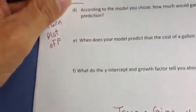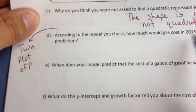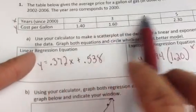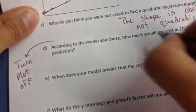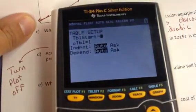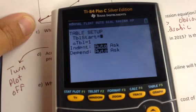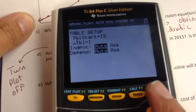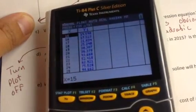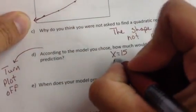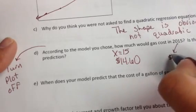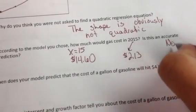So on D, according to the model you chose, how much would gas cost in 2015? I'll use the table set. But remember, we don't have 2015 up here. How many years is that since 2000? So that means I'll be focusing on when x is 15. So I'm going to press second window, and I want to just say, hey, start at 15. And then go to your table and it will tell you the answer. So according to this, and this is money, so $14.60. Is this an accurate prediction? Well, it's 2016 and gas is somewhere around $2.13. So no, it's not.